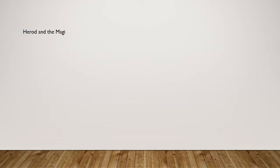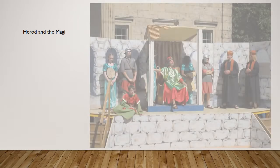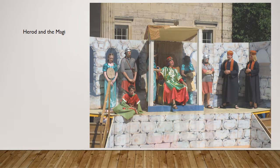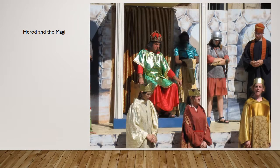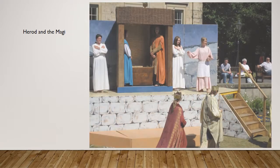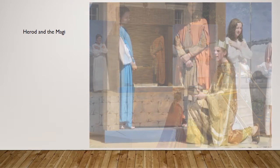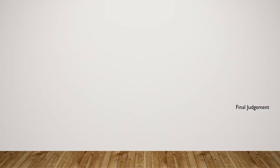Here we see Herod and the Magi. Herod, incidentally, was famous as being a very overblown, violent, over-the-top character in performance — so in A Midsummer Night's Dream, Bottom says that he will out-Herod Herod, meaning he's going to be a big, tough character. And finally, the Final Judgment.